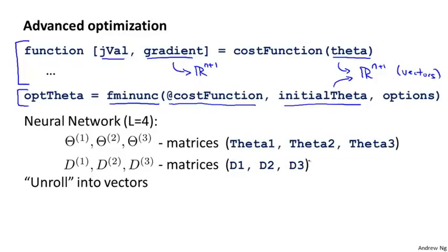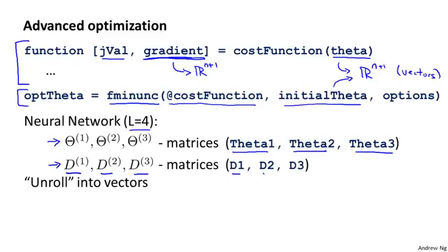This worked fine when we were using logistic regression. But now that we're using a neural network, our parameters are no longer vectors. Instead, there are matrices — for a four-layer neural network, we would have parameter matrices theta one, theta two, theta three. Similarly, the gradient terms we're expected to return are the gradient matrices D one, D two, D three, which we might represent in Octave as matrices D1, D2, D3.